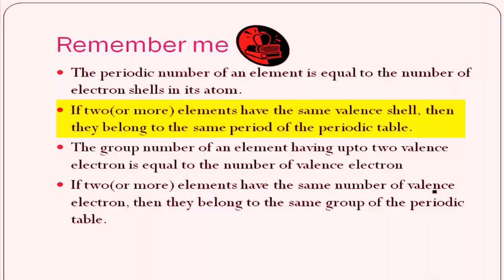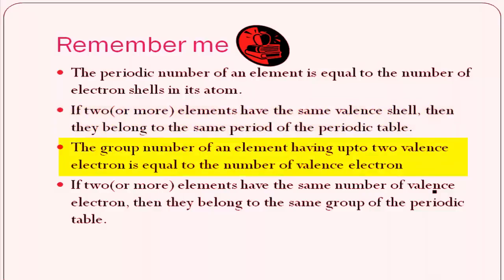Third point: the group number of an element having up to two valence electrons is equal to the number of valence electrons. For example, if an element has 2 valence electrons, it belongs to group 2. When an element has more than 2 valence electrons, the group number equals the number of valence electrons plus 10. For example, if an element has 3 valence electrons, its group number is 3 plus 10, that is group 13.